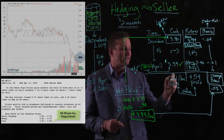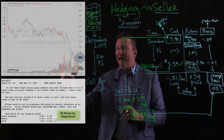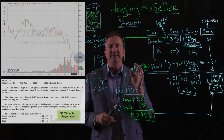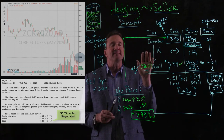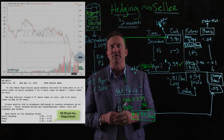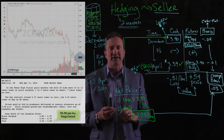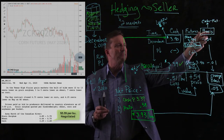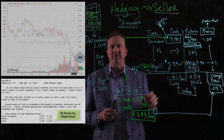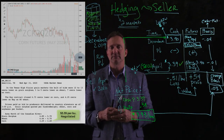The cash market hurt us by 51 cents, the futures market helped us by 54 cents — we ended up 3 cents better off. These two markets offset each other and that is the value of the hedge. That's how you set up the seller's hedge using the futures market and cash market. Make sure to go over the review questions, which connect to the new terms and the four-column table setup. Hope this helps you understand how to address hedging examples for a seller.